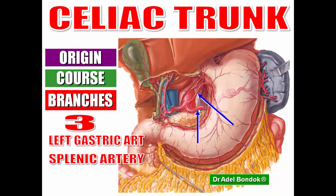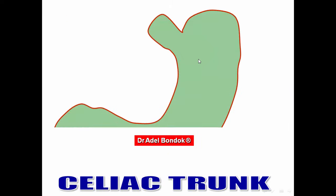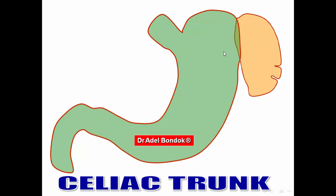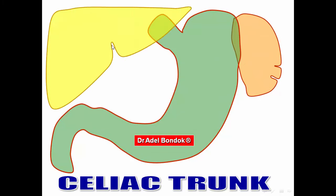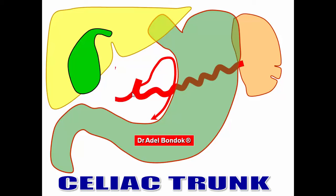The splenic artery runs in a wavy course along the upper border of the pancreas. The third branch is the hepatic artery. So to summarize: the celiac trunk divides into three branches — the left gastric artery, the splenic artery going to the spleen, and the hepatic artery going to the liver.